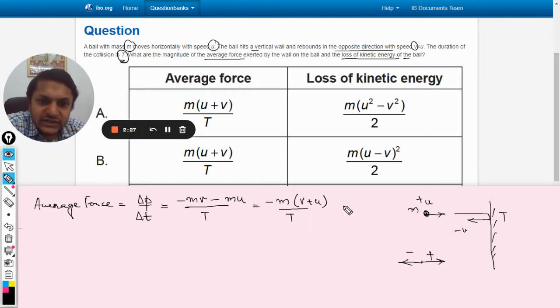Now what is this negative sign denoting here? The negative sign is taken because of the direction. And see, according to the sign convention, negative means the force has acted on the ball, because we are concerned with the change in momentum of the ball.